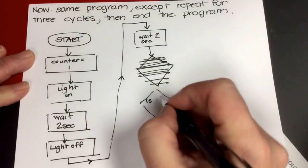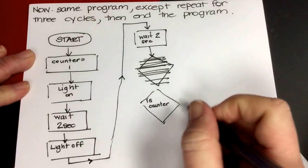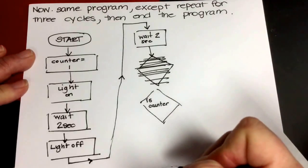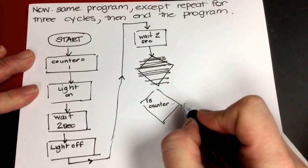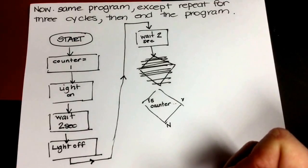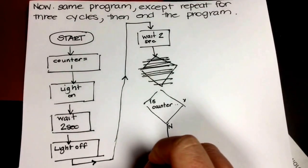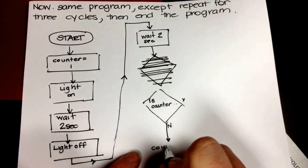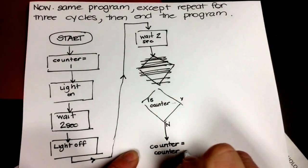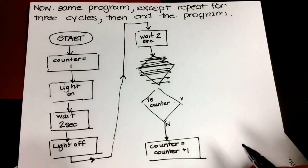Is counter, and what's the question there? Is it equal to three? Is it greater than three? Is it greater than or equal to three? Well, let's think about it. So one of these has to be a yes, and one of them has to be a no. If it's a no, we know that we haven't run it enough times, and we need to say counter equals counter plus one, and we want to repeat the cycle.